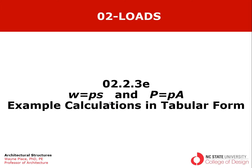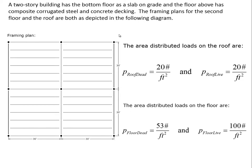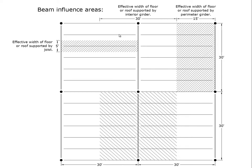We're going to start organizing our data in tabular form. We've been talking about the two-story building where the bottom floor is slab on grade, then there's an elevated floor, then above that a roof. The column grid is 30 feet by 30 feet. The loads are 20 pounds per square foot for roof dead load, 20 for roof live load, 53 for floor dead load, and 100 for floor live load. We associated certain widths with certain beams: 5 feet for the joist, 15 feet for the perimeter girder, and 30 feet for the interior girder.